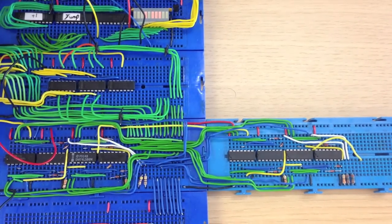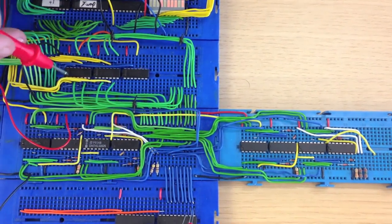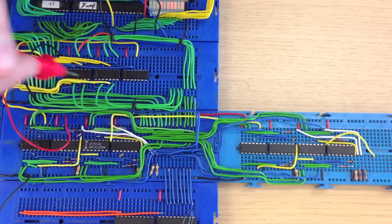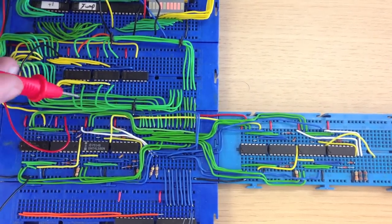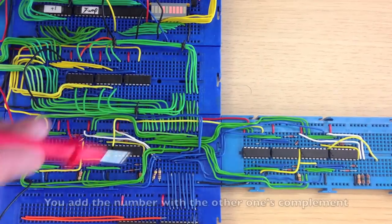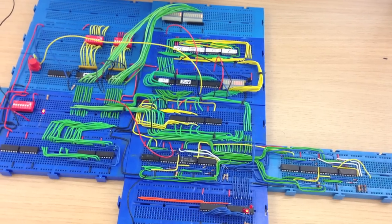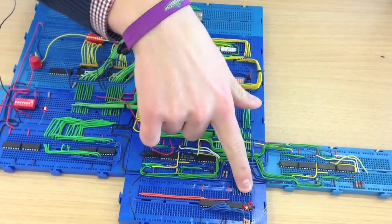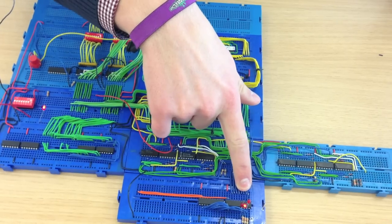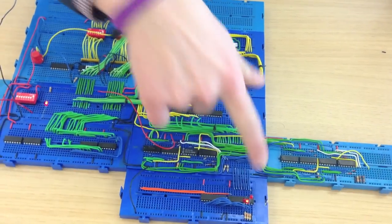This is combined with Charlie's negator board. So when the control line is a zero, we just route whatever is in the register. When the control line is one, we route its negated value. So when we do a subtraction, we add a number with its complement. Right now we can only display the three bits on the output, so we can show values from zero to seven.